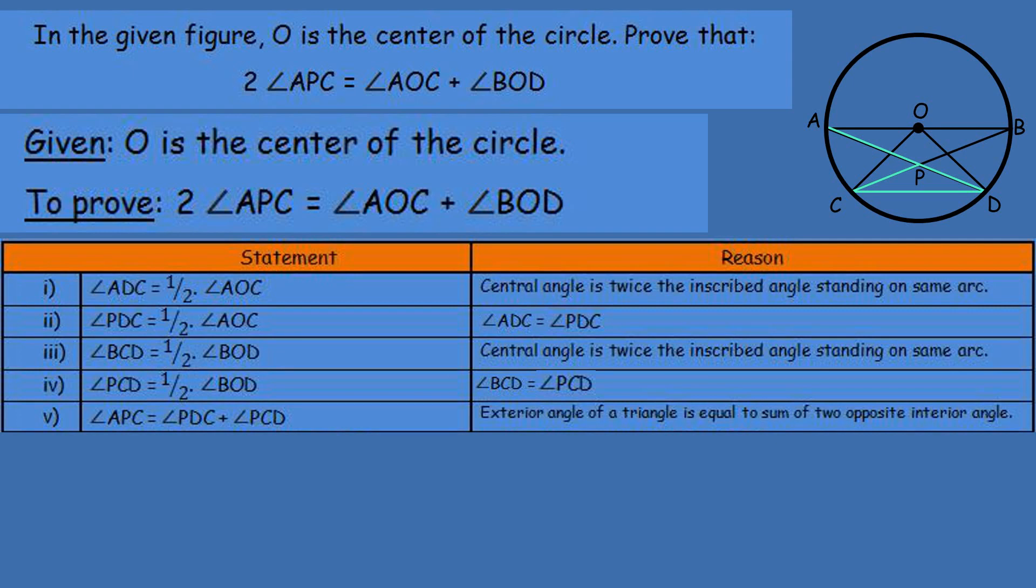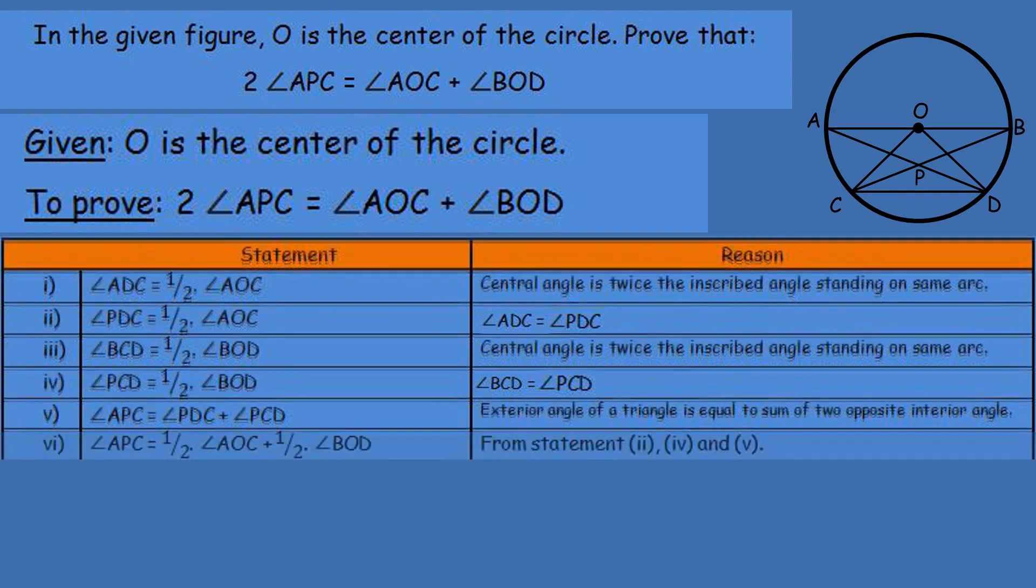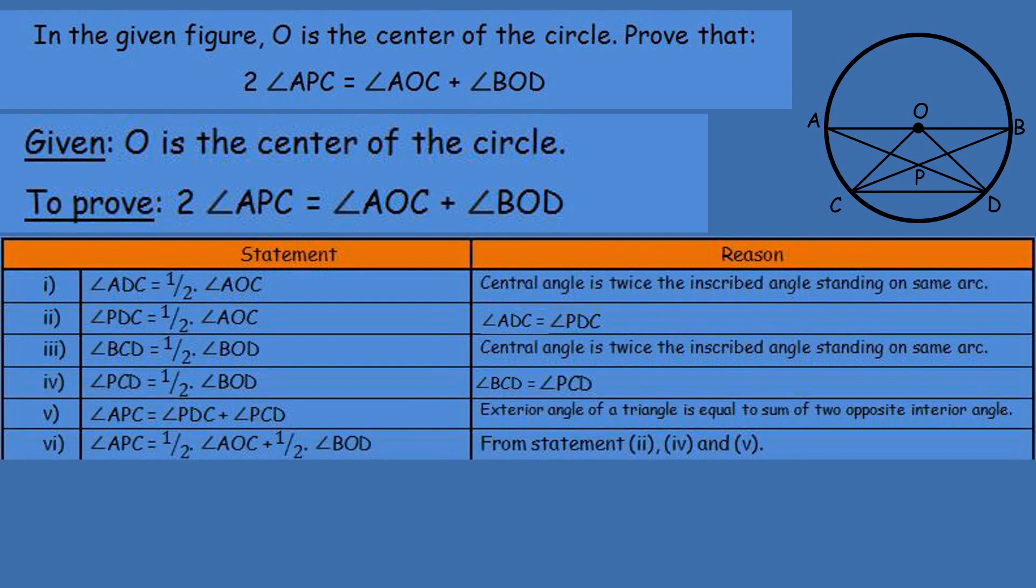is equal to angle PDC plus angle PCD. Why? Because exterior angle of a triangle is equal to sum of two opposite interior angles. Now, from the second and fourth statement, we substitute angle PDC and angle PCD values into the fifth statement. Angle APC is equal to half of angle AOC plus half of angle BOD.